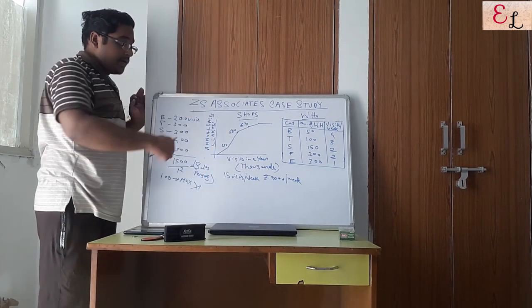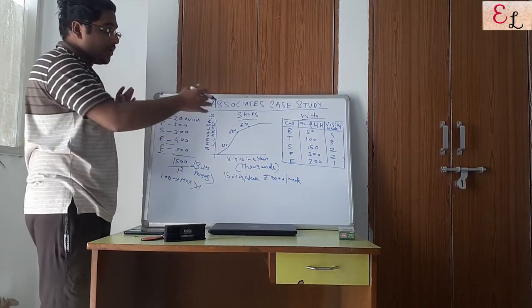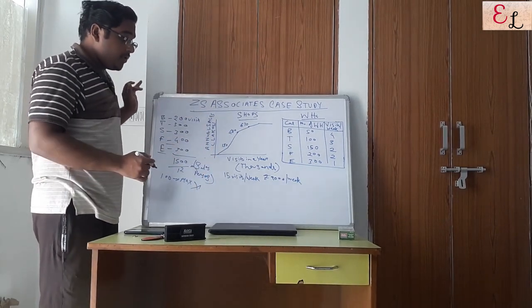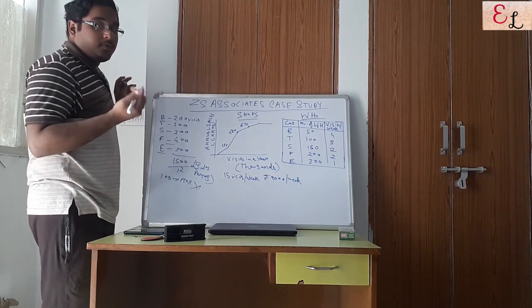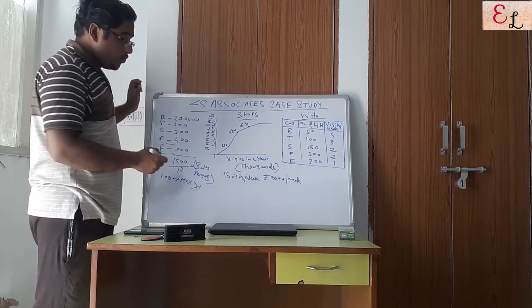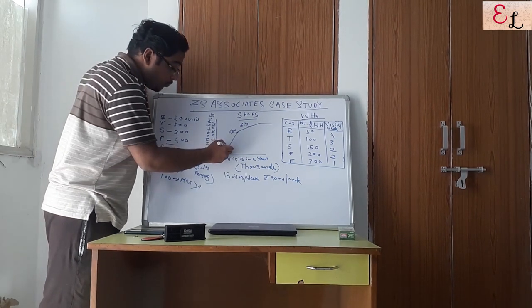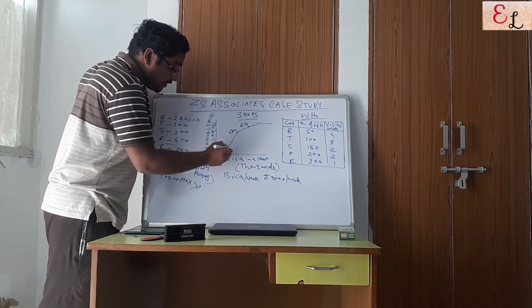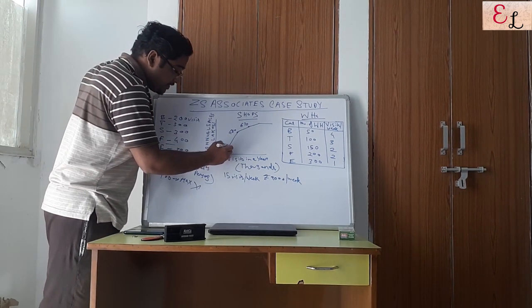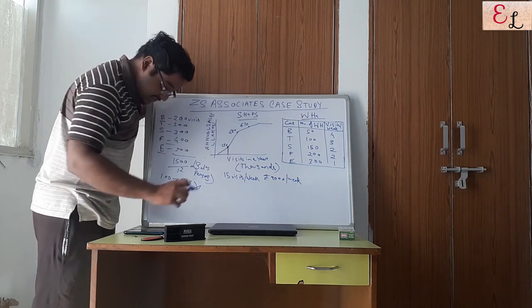Now coming to the number of shops. For shops, you are given some mode points: for a certain number of visits, there is a corresponding annual sales figure.